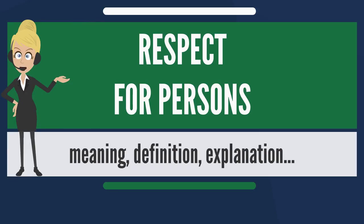Respect for Persons is the concept that all people deserve the right to fully exercise their autonomy. Showing respect for persons is a system for interaction in which one entity ensures that another has agency to be able to make a choice. This concept is usually discussed in the context of research ethics. It is one of the three basic principles of research ethics stated in the Belmont Report issued by the Office of Human Subject Research.